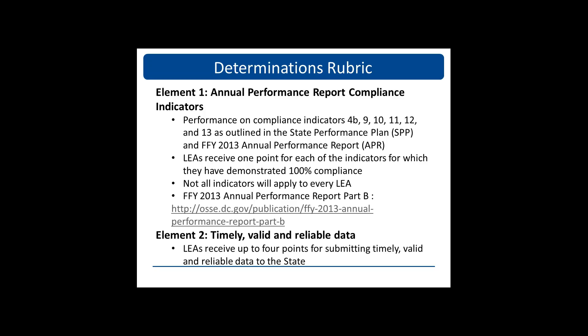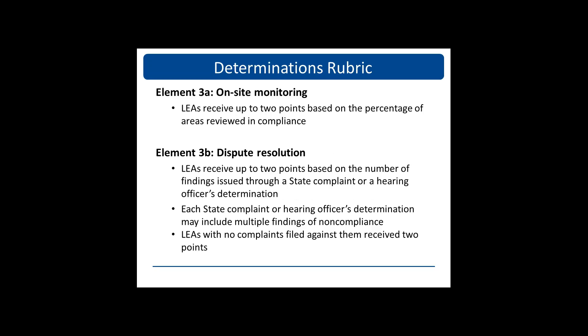Element 2 is Timely Valid and Reliable Data Submissions, in which your LEA's child count data submission was used as the data source. Element 3A is On-site Monitoring — LEAs receive up to two points for this element. In Element 3B, Dispute Resolutions, LEAs receive up to two points based on the number of findings issued through state complaint or HOD. Each state complaint or HOD may include multiple findings of noncompliance. LEAs with no complaints filed against them would receive two points.